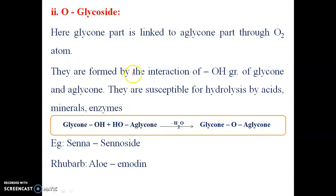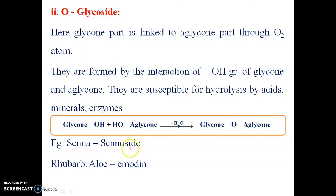Next is O-glycoside. Here, the glycone hydroxyl group and the aglycone hydroxyl group conjugate, forming an O-glycoside where glycone and aglycone are attached by an oxygen atom. The classical example is Senna.